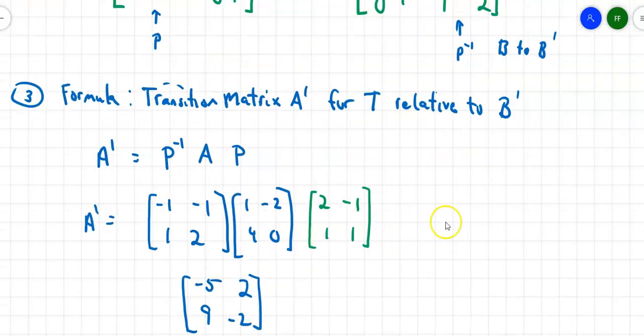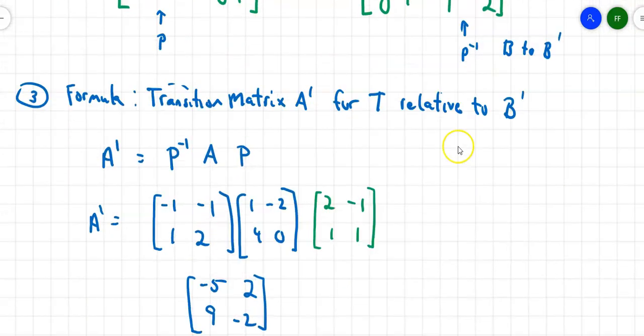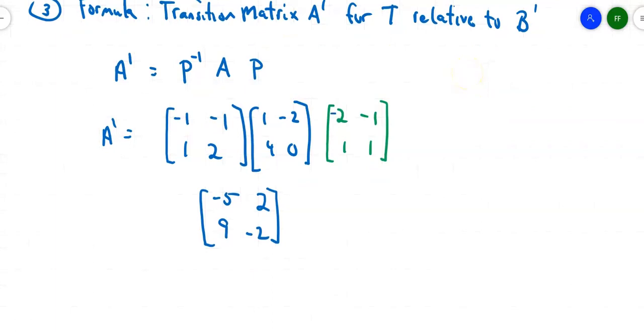Now we'll multiply it by that green matrix. I left out a negative sign - that should be a -2 up here. Now we'll multiply this matrix by (-2, -1, 1, 1). -5 times -2 is positive 10, 10 plus 2 is 12. That'll give me then positive 5 plus 2 is 7. -18 minus 2 is -20, and -9 minus 2 is -11. This matrix here is A'. That's the matrix that transitions me relative to the new basis.